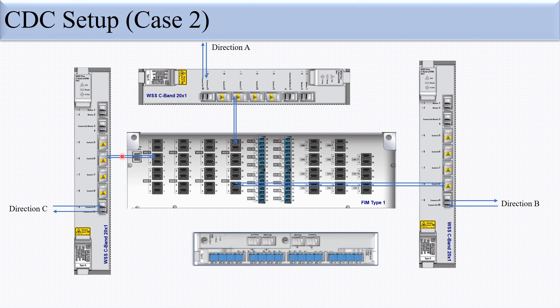For different directions, different switch ports connect to different FIM modules. In this CCMD 8x16 setup, lambda 1 comes from direction A, lambda 1 is also sent or received towards direction B, and lambda 1 from direction C — all handled on the same device. This is all about contentionless in DWDM systems. Thank you.